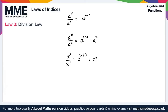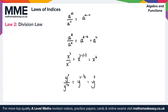We can also use the division law with fractional powers. For example, y squared divided by y to the power of a half. Applying the law, that's y to the 2 minus a half. Now 2 minus a half is 4 over 2 minus 1 over 2, giving us y to the 3 over 2. We can write that as 1.5, but usually we keep it in exact fractional form.